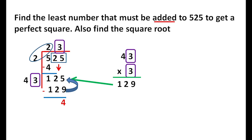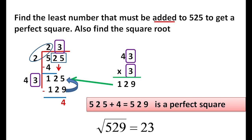We apply the division method to determine what number must be added or subtracted. Now we have the square root of 529 as 23. In the previous video, I applied the prime factorization method — what number must be multiplied, divided, added, or subtracted. You can use the division method too.